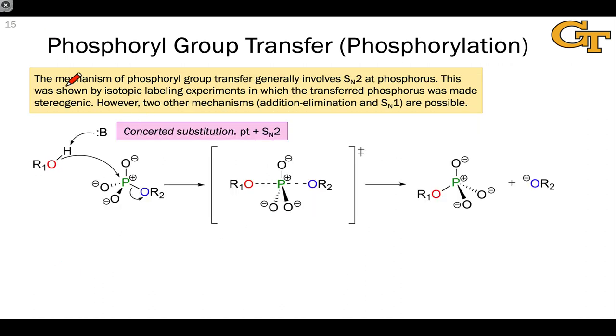Thinking about the mechanism of phosphoryl group transfer is actually really interesting, because at that phosphorus atom, we have a P-O double bond, which suggests we could do a nucleophilic addition-elimination type mechanism, and we have something that can act as a leaving group, which suggests that we could do just a direct substitution mechanism.